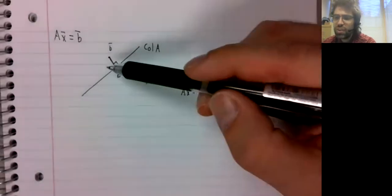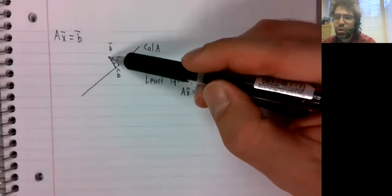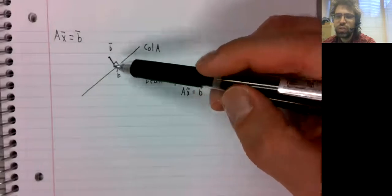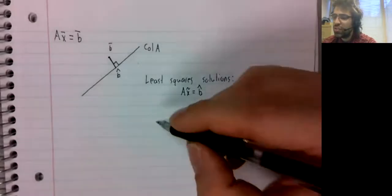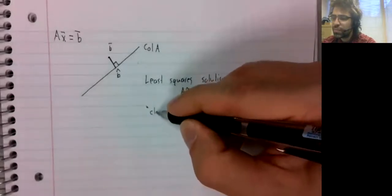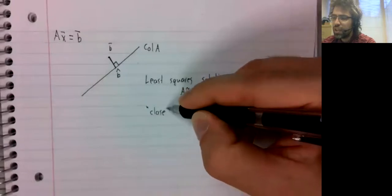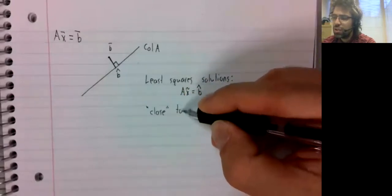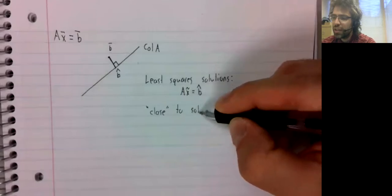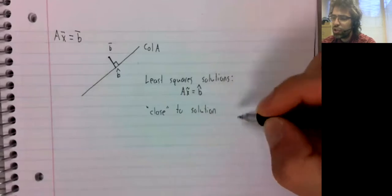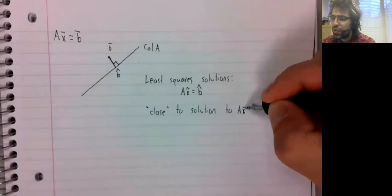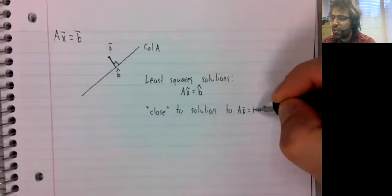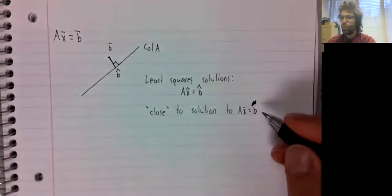And the hope is that if these two vectors are close, then anything that is a solution to this is close to being a solution to the original equation.